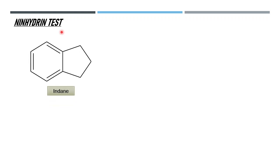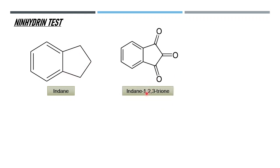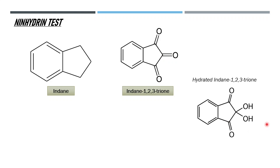First, what is ninhydrin? You start with indane, which is a benzene ring with a five-membered ring connected to it. Then you can think of indane-1,2,3-trione — three ketone groups connected to indene carbons. If you hydrate indane-1,2,3-trione at the most delta-positive carbon, water can attack at that carbon.